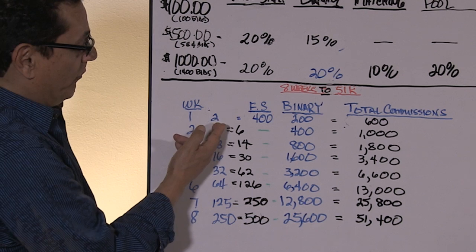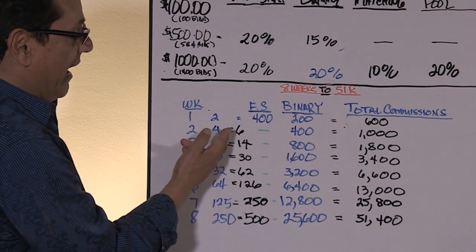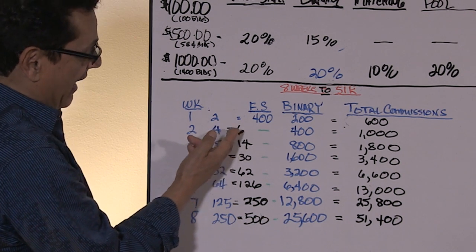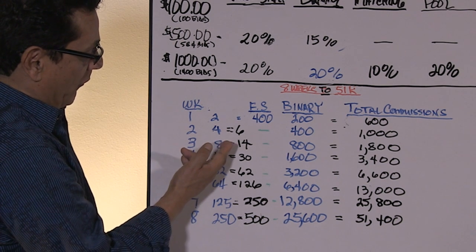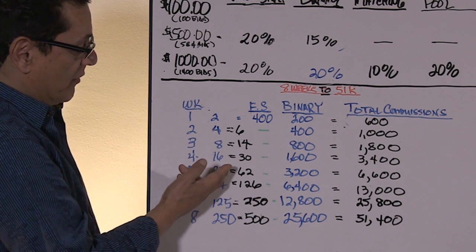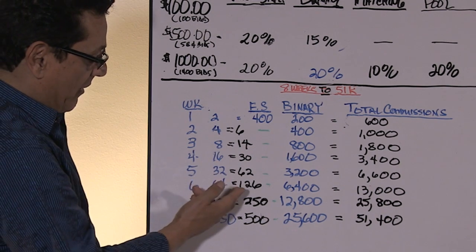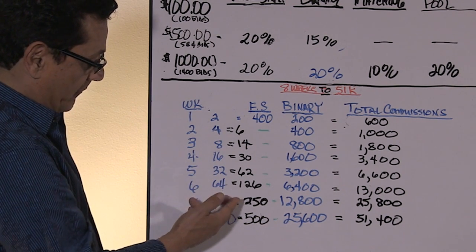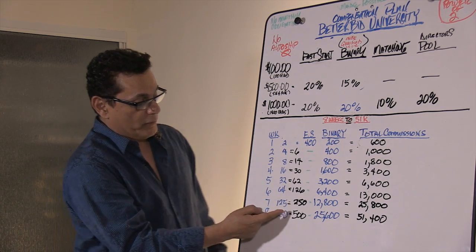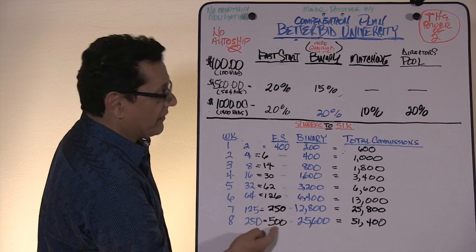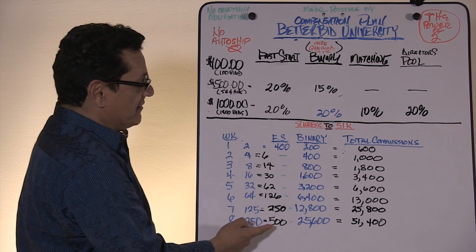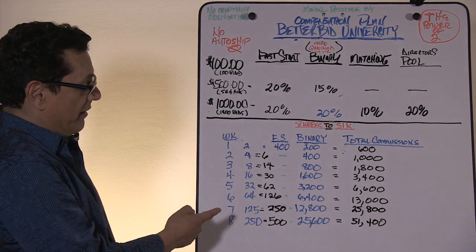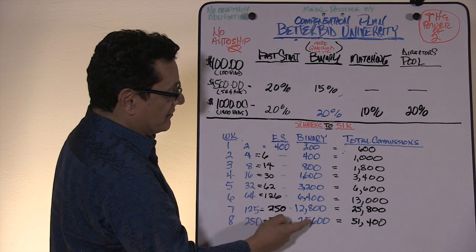And as you see here, week three, week four, geometric progression starts. And by the time you get to the eighth week, you would have realized 500 new directors. And this is a total in your binary of $25,600.